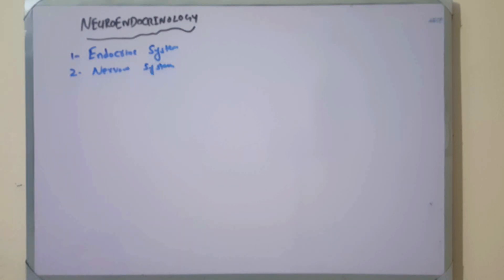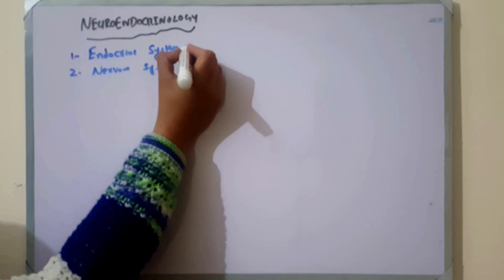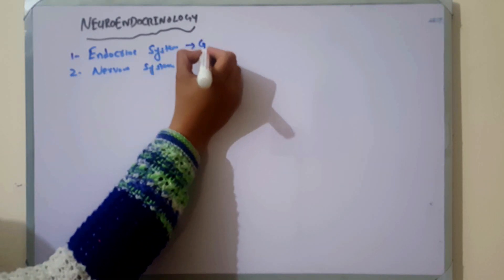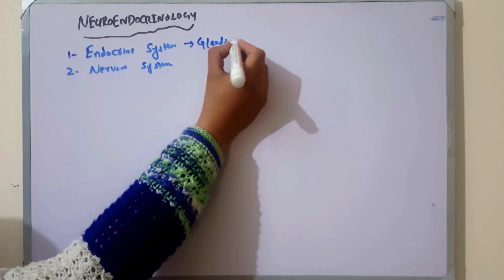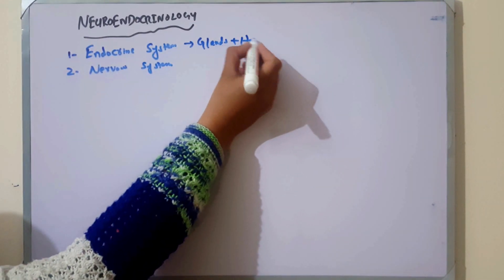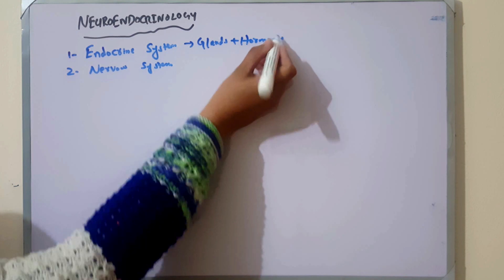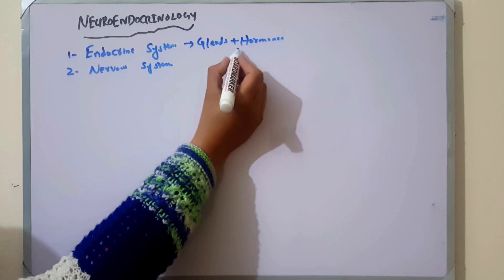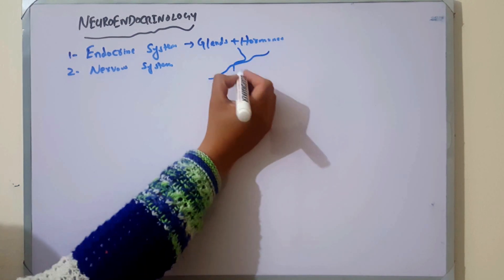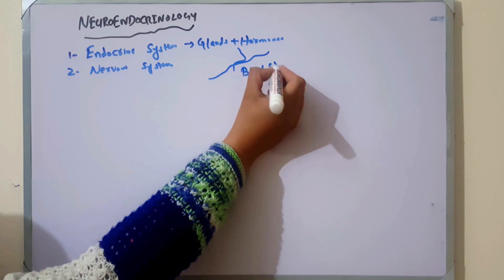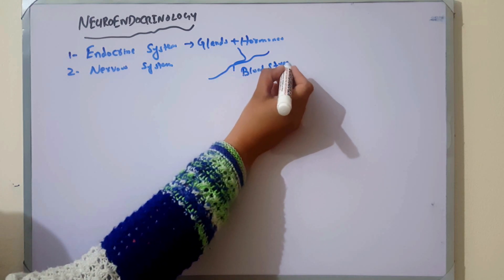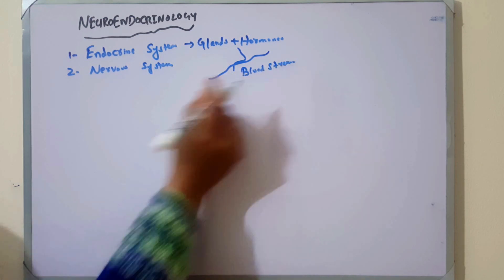In my previous lecture, I told you about the Endocrine system. The Endocrine system is the system of glands and their specific secretions, which are called hormones. Hormones are released directly into the bloodstream and from there they are transported to other parts of the body to exert their function.